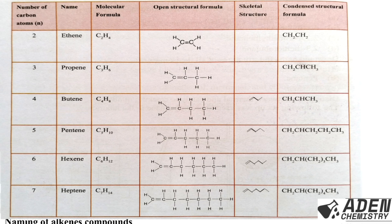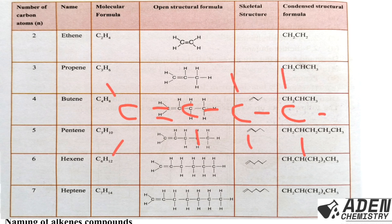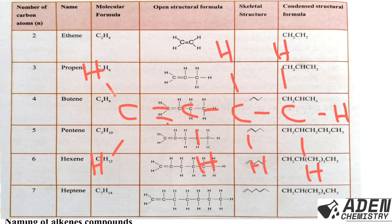For butene, we have four carbon atoms. Draw them in a chain, put the double bond between the first and second carbon, then fill all remaining bonds with hydrogen. Each carbon must have exactly four bonds. This gives the open structural formula for butene. You can do the same for pentene, hexene, and heptene.